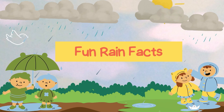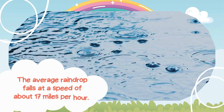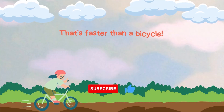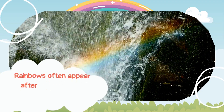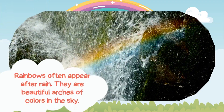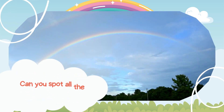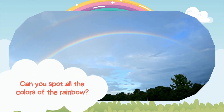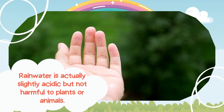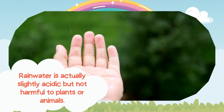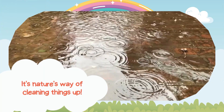Fun Rain Facts. The average raindrop falls at a speed of about 17 miles per hour — that's faster than a bicycle. Rainbows often appear after rain; they are beautiful arches of colors in the sky. Can you spot all the colors of the rainbow? Rainwater is actually slightly acidic but not harmful to plants or animals — it's nature's way of cleaning things up.